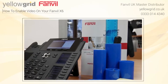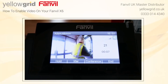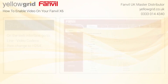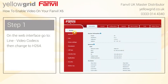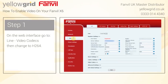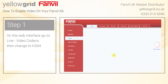This video will show you how to enable video on your Fanville X6 on the web interface. Go to Line, and under Set, go to Video Codec and change to H.264. Once you have clicked Apply, check that the video on your X6 is enabled.